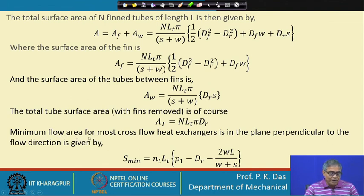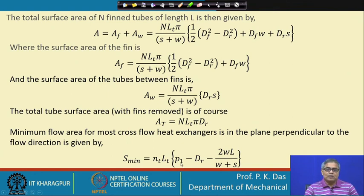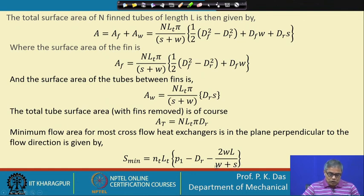The minimum flow area for most cross flow heat exchangers, in the plane perpendicular to the flow direction, is given by the formula involving N_t, L_t, pitch P1, root diameter D_r, fin width w, fin height l, and the inter-fin gap s. This is how the minimum flow area is obtained.